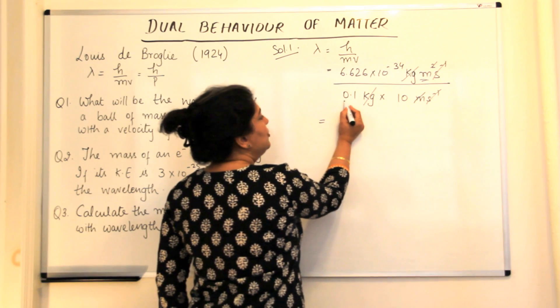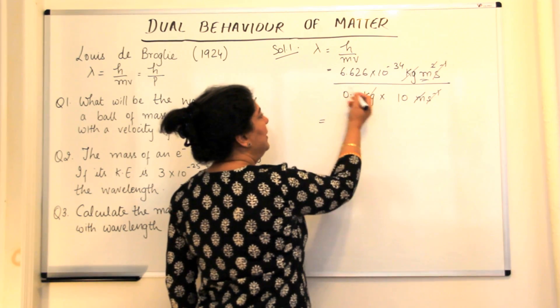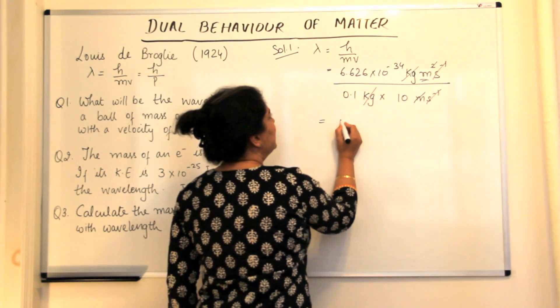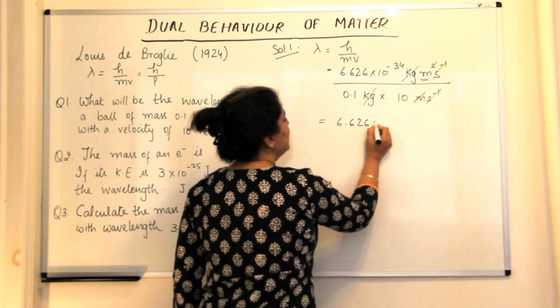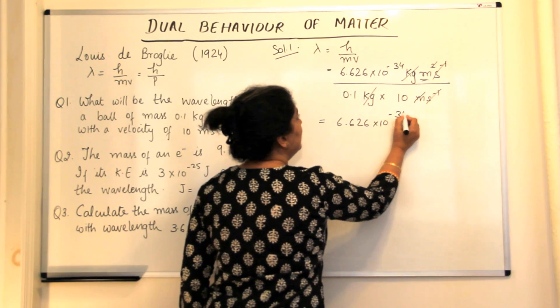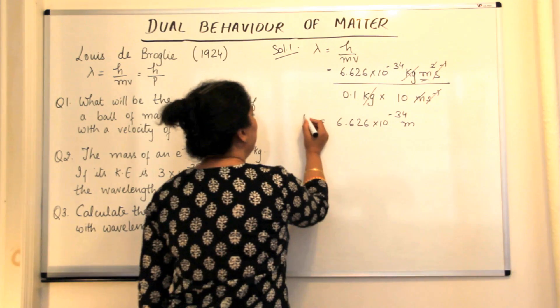So the answer when you calculate this, 0.1 into 10 is 1. Therefore, the answer you get is 6.626 into 10 to the power minus 34 meters is the wavelength.